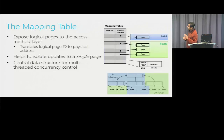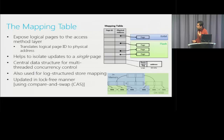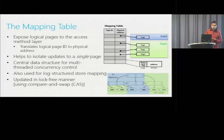The mapping table is also the central data structure used for multi-thread concurrency control. For those familiar with log-structured storage systems, they use a separate mapping table; we use the same one here. Since we have no locks or latches, all updates are done using compare-and-swap — an atomic instruction available in almost all hardware architectures. On x86, compare-and-swap compares the current value with a previously read value, and if they match, swaps in the new value atomically.